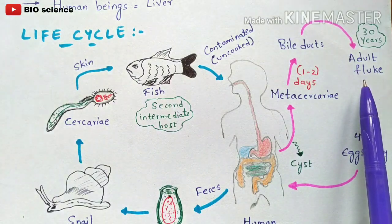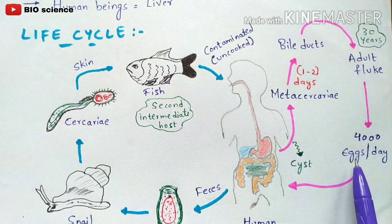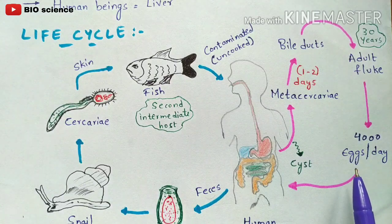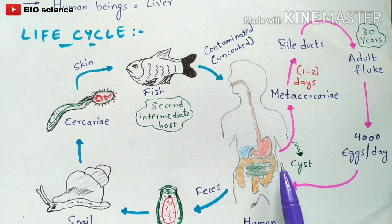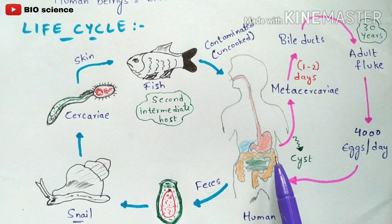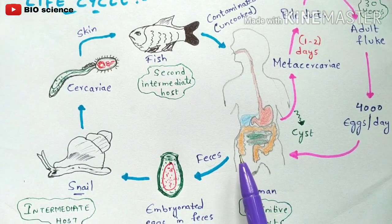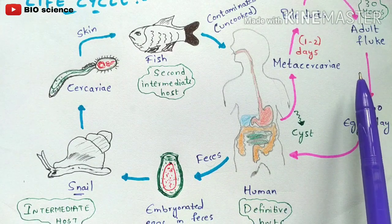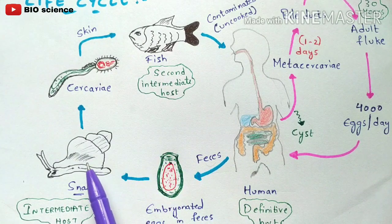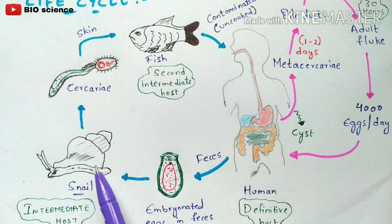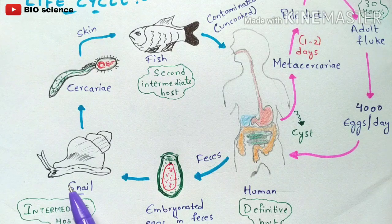The adult fluke has the capacity to produce 4,000 eggs per day. These eggs re-enter the digestive system and are released again with the fecal material. The fecal material containing the embryonated eggs — released by the adult fluke — is excreted, and the entire life cycle repeats: snails consume the fecal material containing embryonated eggs, which enter the snail's digestive system — the primary intermediate host.